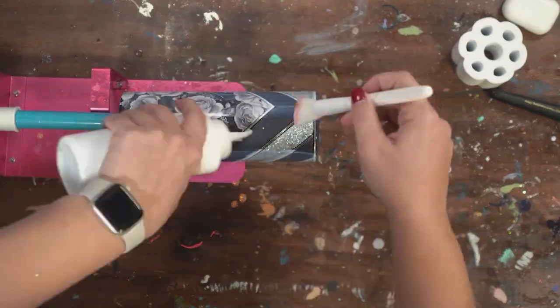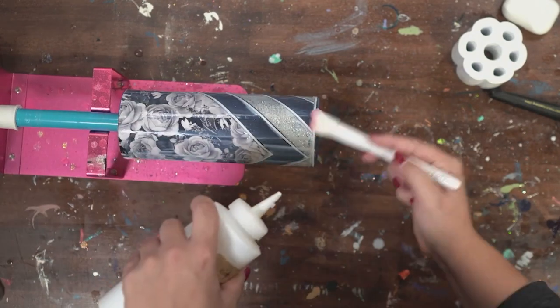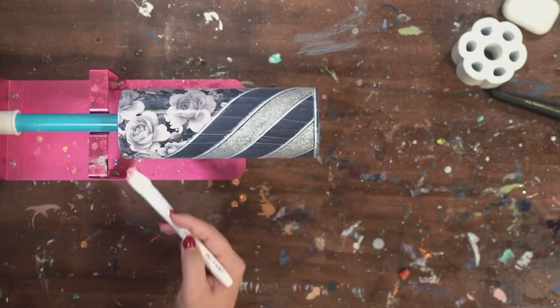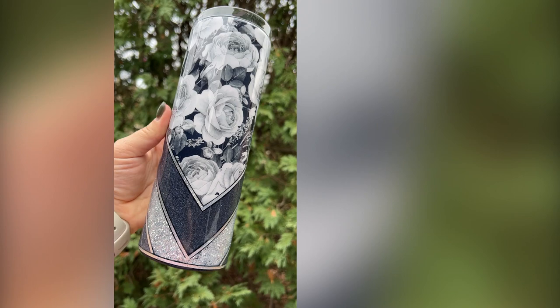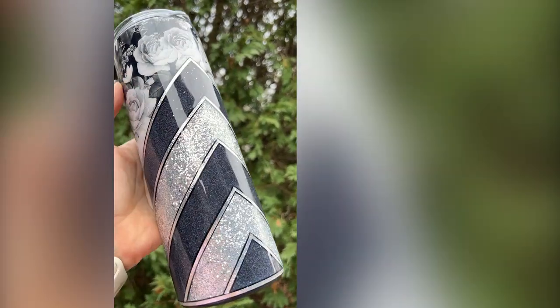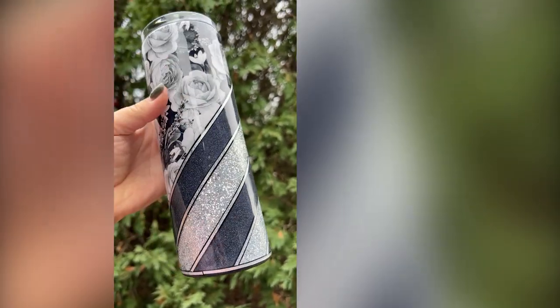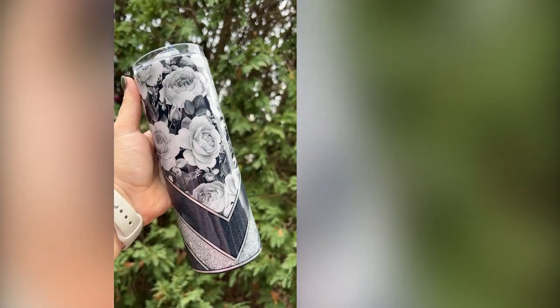Then I went in with my coats of Grand Finale and sanded and kept going until it was fully smooth. Let me know in the comments what you think and I'm going to put another vinyl wrap tumbler tutorial up on your screen so you can see what else you can do with that vinyl.